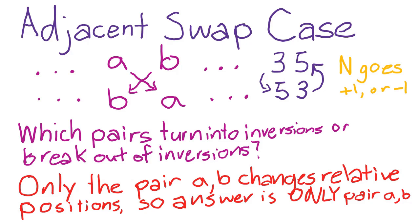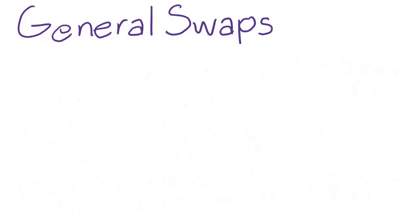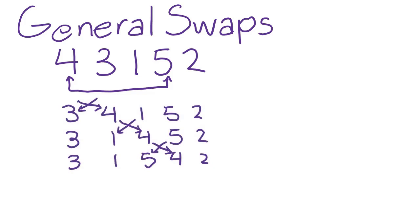So that completes the adjacent swap case. So what about swaps in general? Well, we can construct a general swap from chaining a bunch of adjacent swaps. Suppose we wanted to swap 4 and 5 in the list 4 3 1 5 2. Then one way to do this is to use three adjacent swaps to move 4 to where 5 currently is, and then use two more swaps to move the 5 where the 4 originally was.